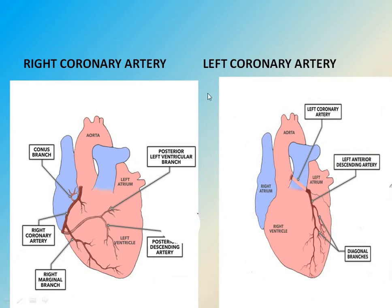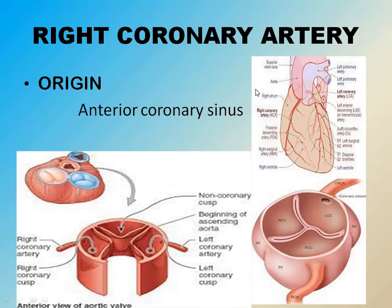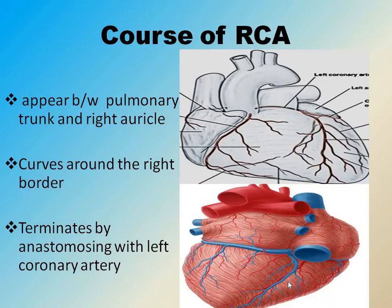There are two coronary arteries: the right coronary artery and the left coronary artery. The right coronary artery arises from the anterior coronary sinus. In the aorta, there are three dilations — the anterior coronary sinus and two posterior sinuses. The right coronary artery appears between the pulmonary trunk and the right auricle, and it curves around the right border.